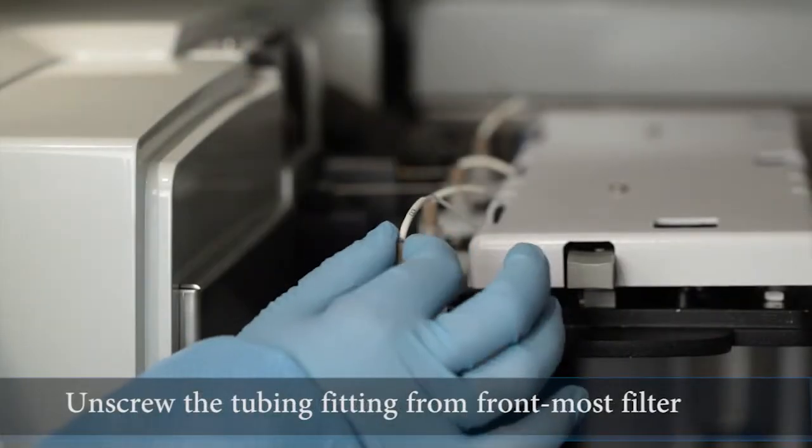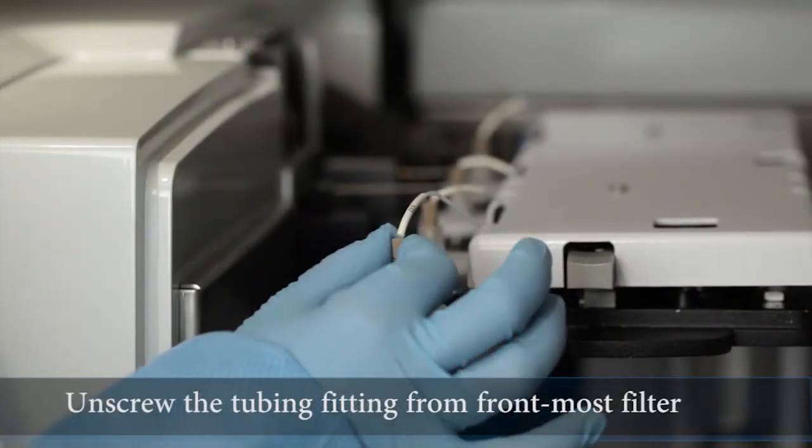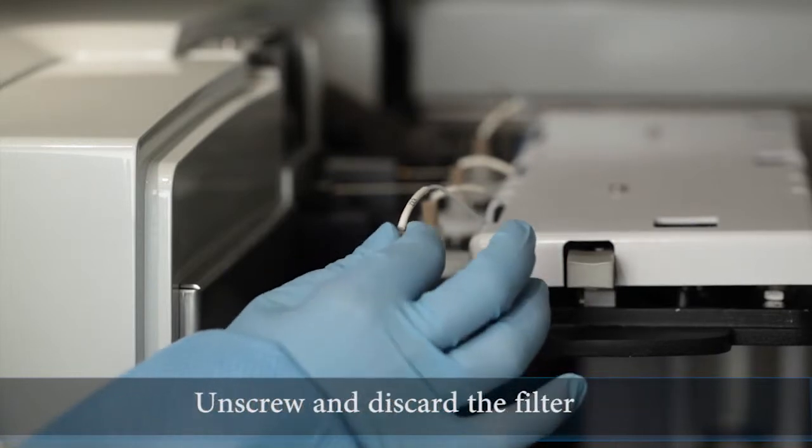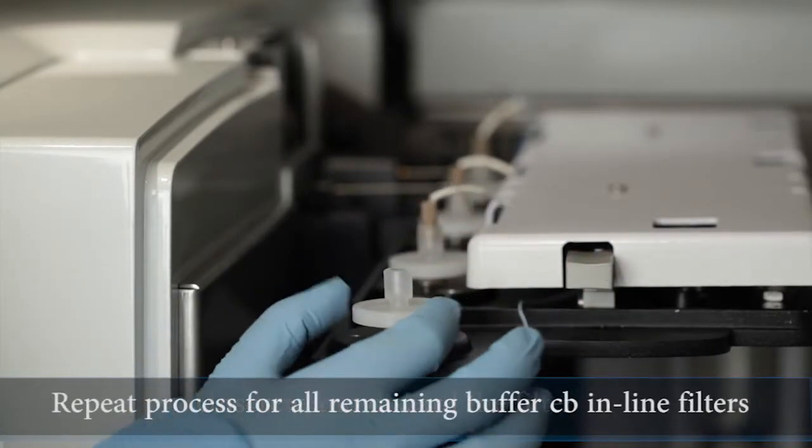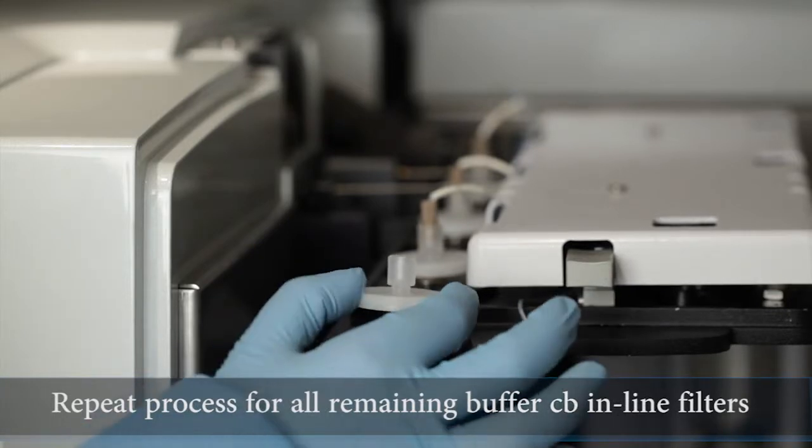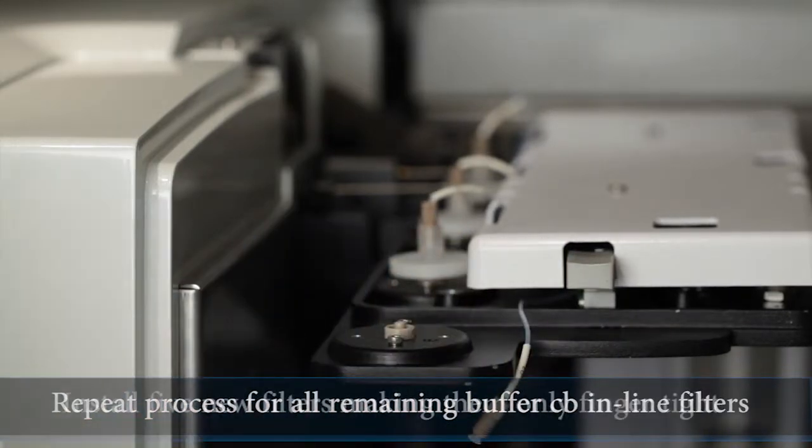Unscrew the tubing fitting from the filter located at the frontmost position. Unscrew and discard the filter, then repeat this process for all remaining buffer CB inline filters for a total of five positions.